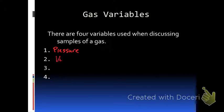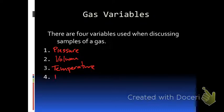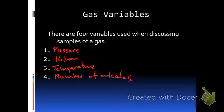The four variables are temperature, volume, pressure, and the number of molecules. For pressure, volume, and temperature we have particular units that we use to describe those variables.